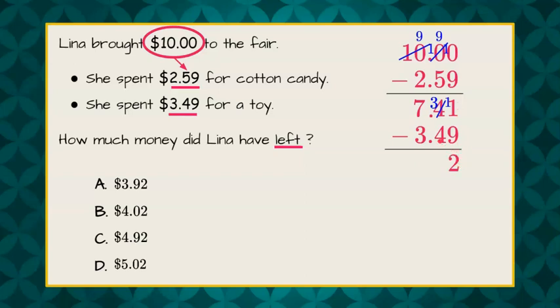But, now I cannot take 4 from 3 because it's smaller. So, I look to the 7. And, I'm going to make that a 6 and bring the $1 over. So, now I have 13, subtract 4, which is 9. Bring down my decimal point. And, 6, subtract 3, is 3.